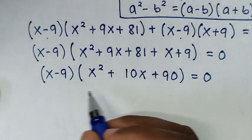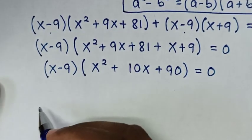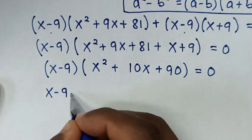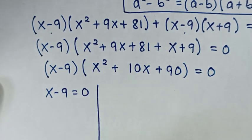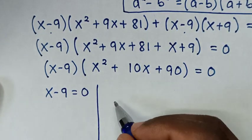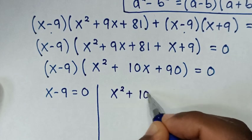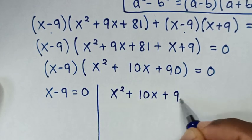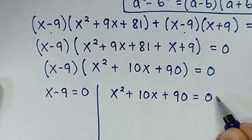Now from here we have two solutions. The first solution is x - 9 = 0, and the second solution is x² + 10x + 90 = 0.